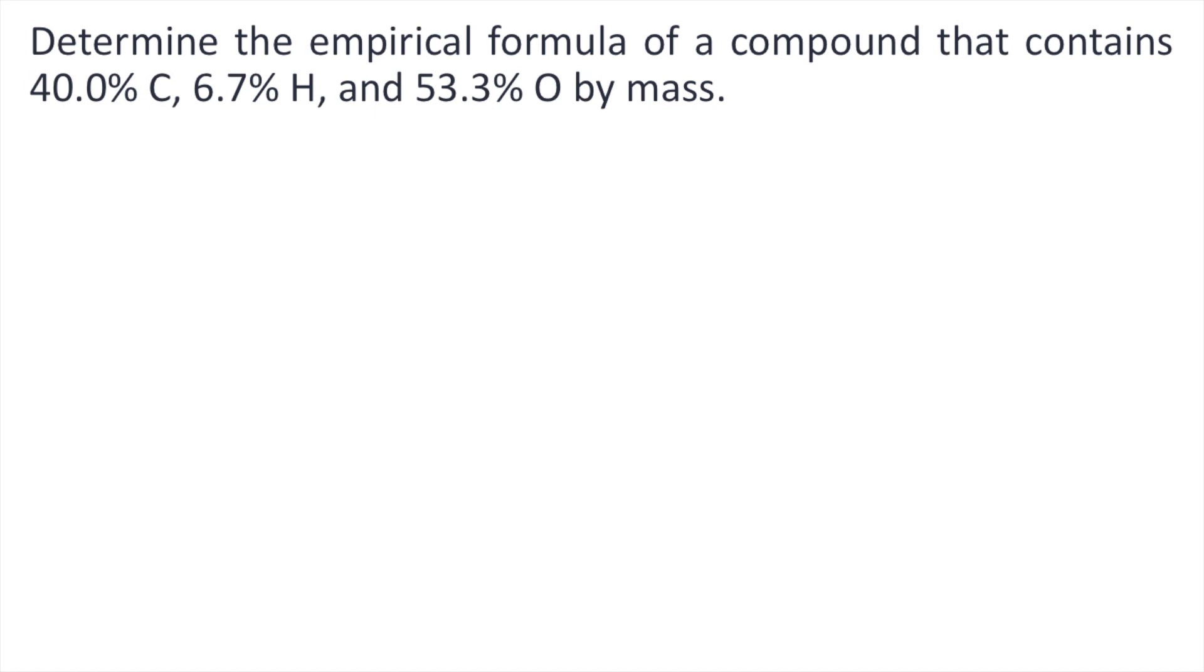To solve this problem, the first thing you need to do is convert the percents into grams. So for example, 40% carbon, that is 40 grams of carbon, 6.7% hydrogen, that is 6.7 grams of hydrogen, 53.3% oxygen, that's 53.3 grams of oxygen.